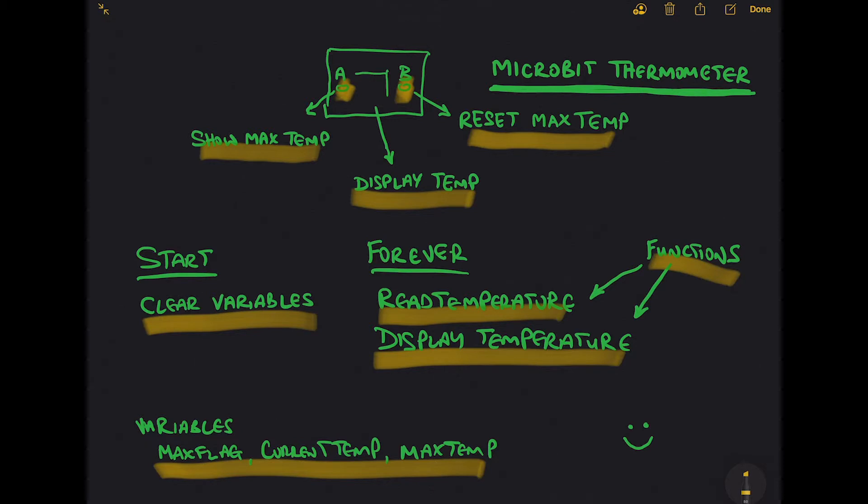In the forever loop it's fairly straightforward: we're going to read the temperature and display the temperature. These are going to be functions that we're going to call to do the work for us. Let's jump into the code.